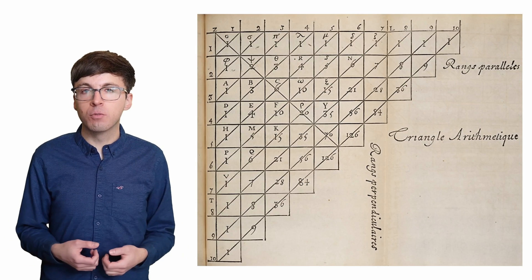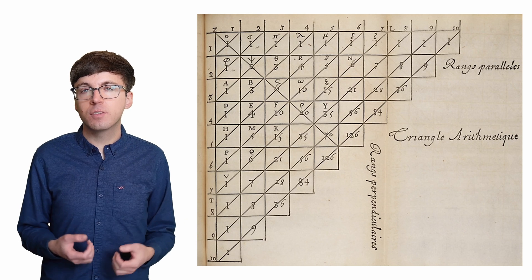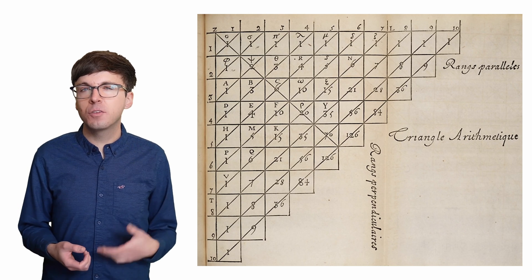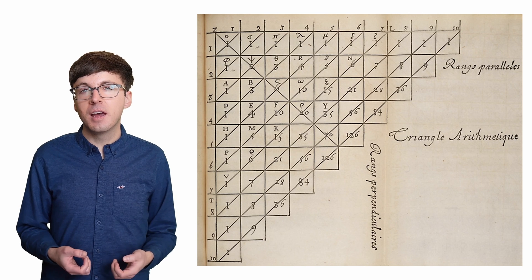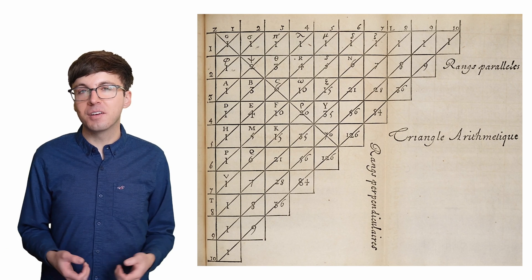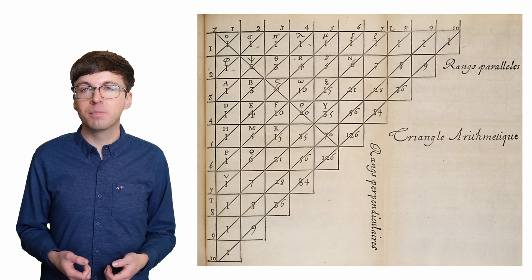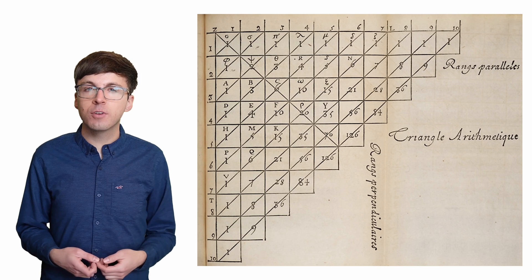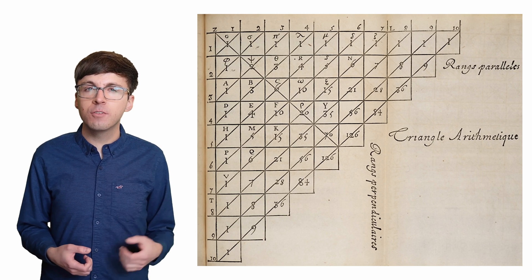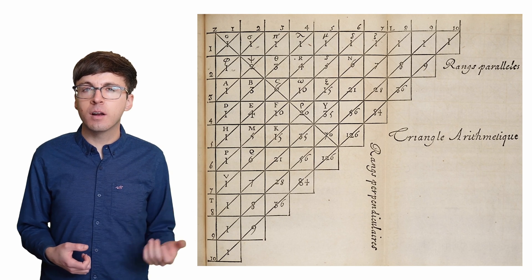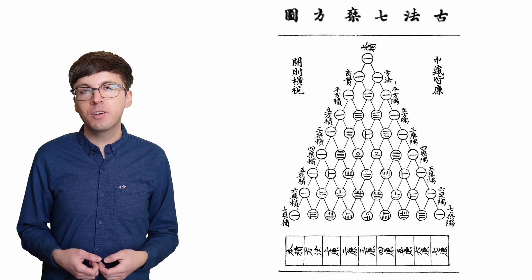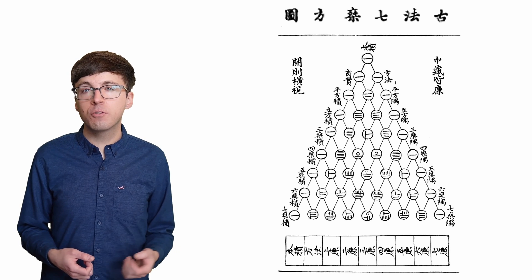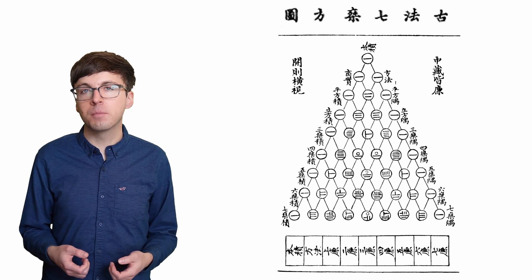Here's how Blaise Pascal drew this triangle in his Treatise on the Arithmetic Triangle. Since the triangle is named after him, we can be sure of one thing: others studied it before he did. About 6 centuries earlier in Persia, Al-Kharaji and Omar Khayyam studied this triangle. You might also hear it called Yonghui's Triangle or Tartaglia's Triangle.